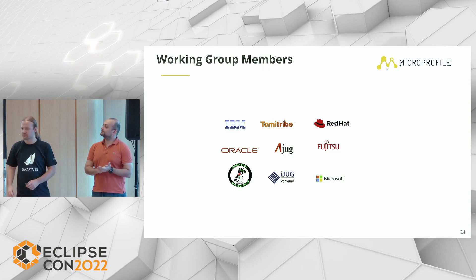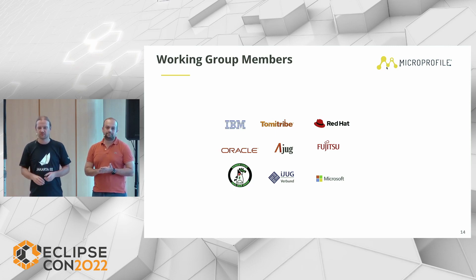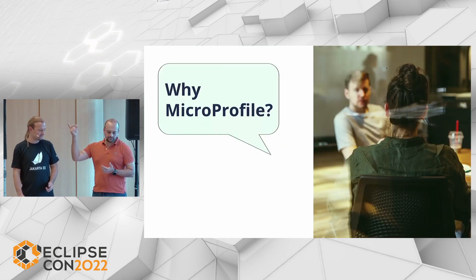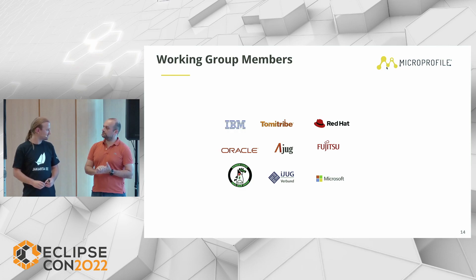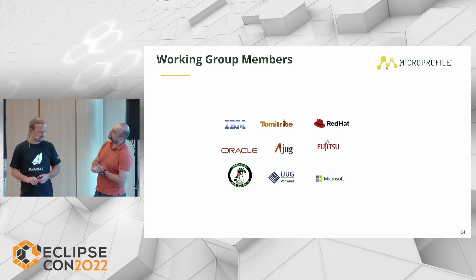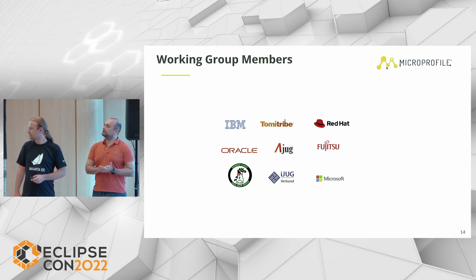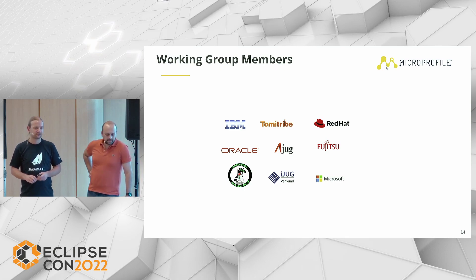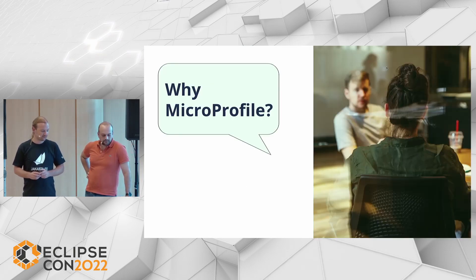The MicroProfile working groups include both Java user groups and big corporations. The cool thing is it's not just companies — it's also a bunch of JUGs: the German umbrella JUG, Atlanta JUG, and Garden State JUG from New Jersey.